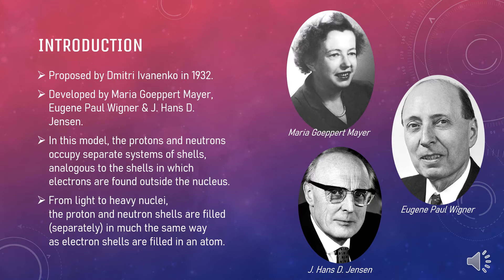The protons and neutrons occupy separate systems of shells, which is analogous to the shells in which electrons are found outside the nucleus. From light to heavy nuclei, the proton and neutron shells are filled separately in much the same way as electron shells are filled in an atom. The nuclear shell model is similar to the atomic model where electrons arrange themselves into shells around the nucleus.